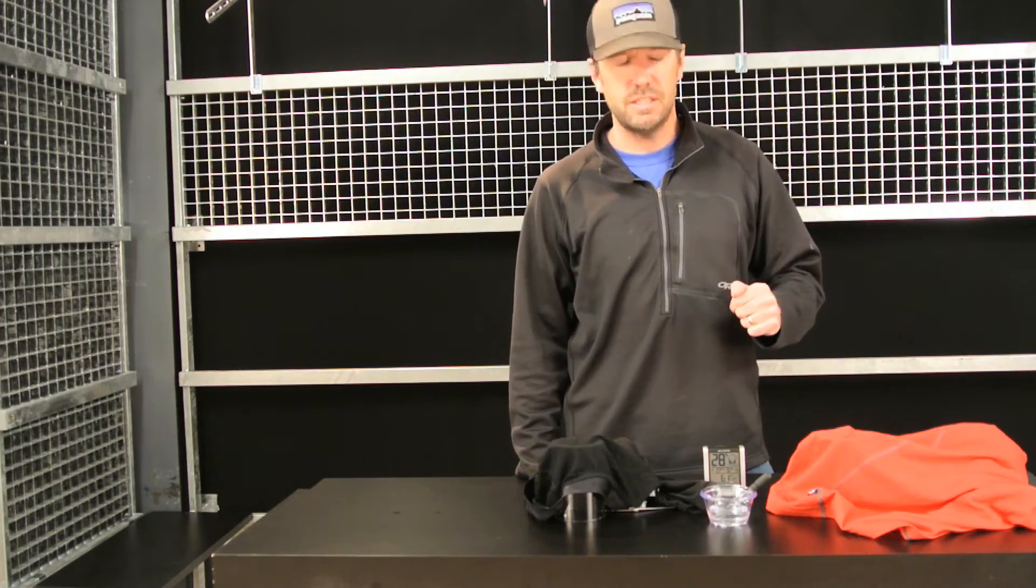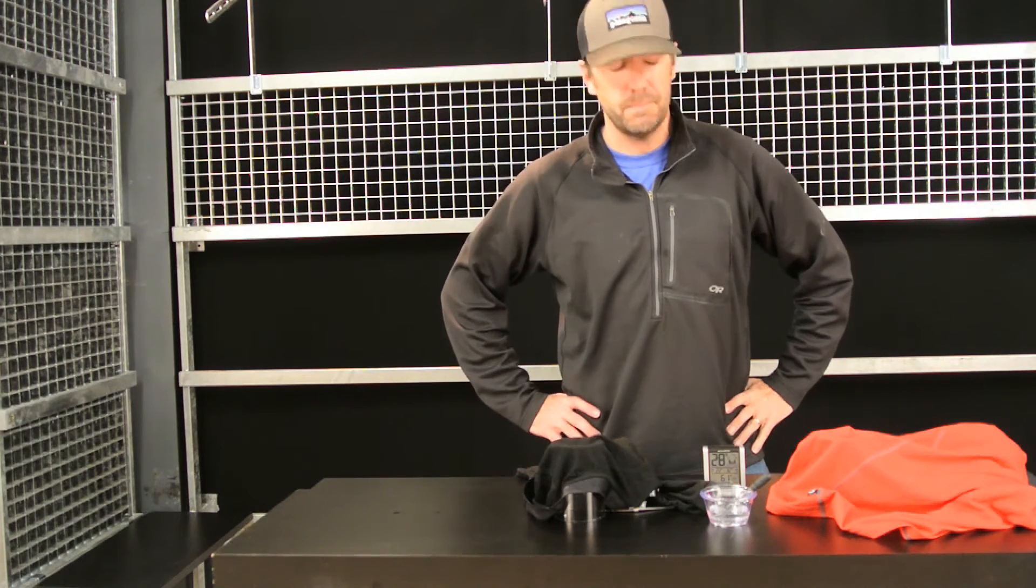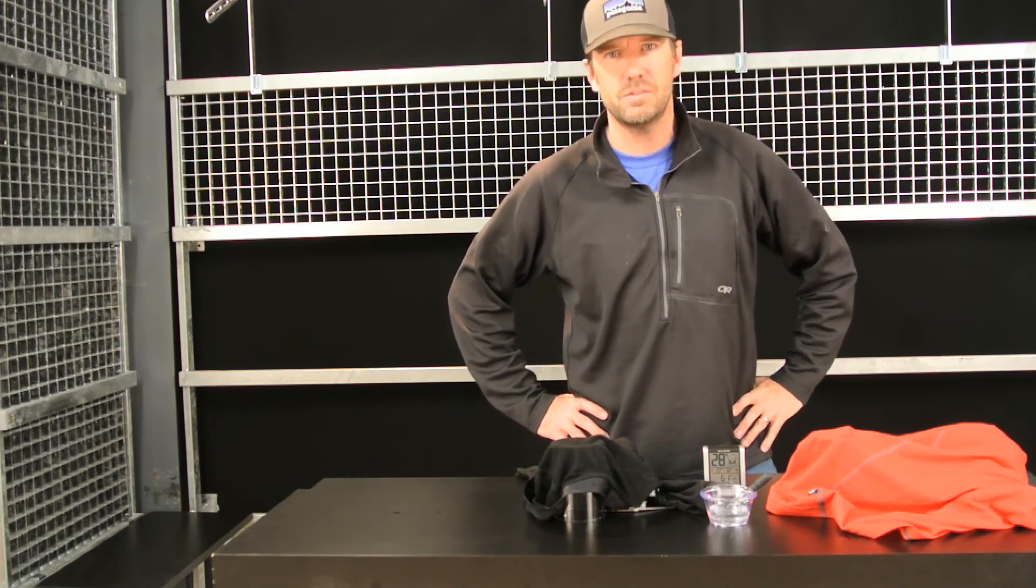If you have questions on this or suggestions, give us a call, area code 406-582-0508, or send us an email to info@ProLiteGear.com. Thanks for watching.